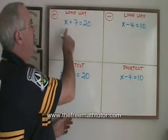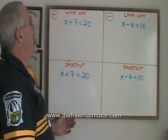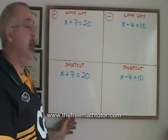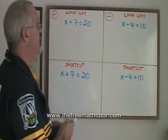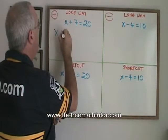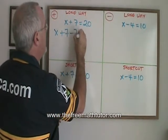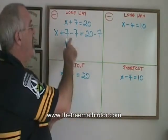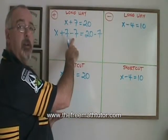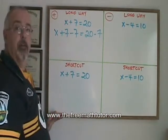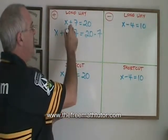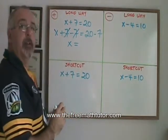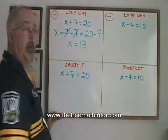In the expression x plus 7 equals 20, my x is having a 7 added to it. What I do is I show that I am subtracting a 7 from both sides. I can subtract a 7 from the left side, as long as I'm also subtracting it from the right side. But the 7s on the left side cancel, and that leaves my x isolated. It is equal to 20 minus 7, which is 13. I have my answer.